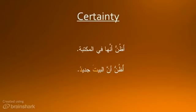أَظُنُّ أَنَّهُ فِي الْمَكْتَبَةِ. Objects of أَنَّ are mansoob, or accusative. They are subjects of a sentence, so they would normally be marfuah, or nominative. أَنَّ has no effect on the predicate of that sentence, and it will still be marfuah. You might notice the book calls the noun the subject of أَنَّ, but it is actually an object.